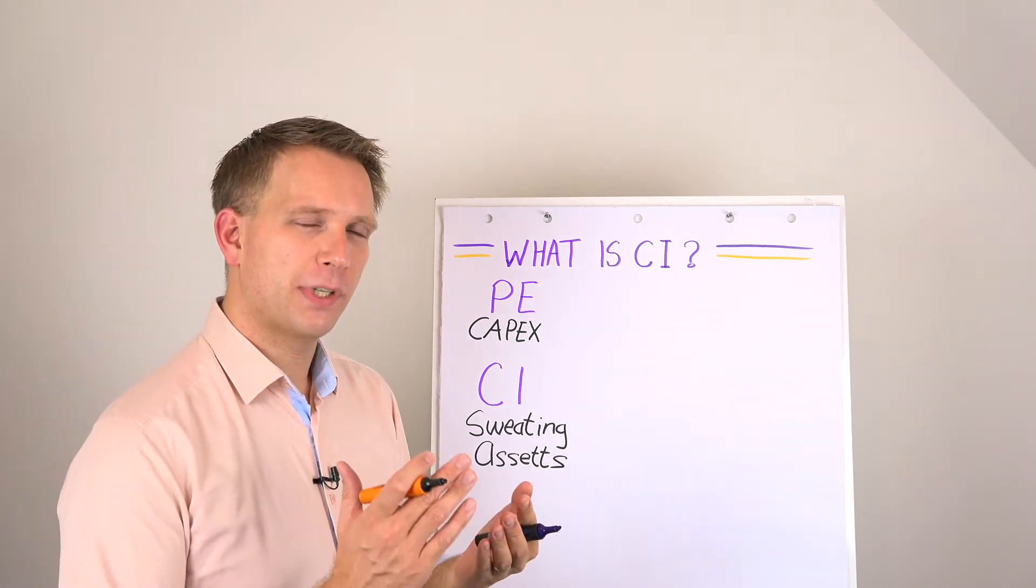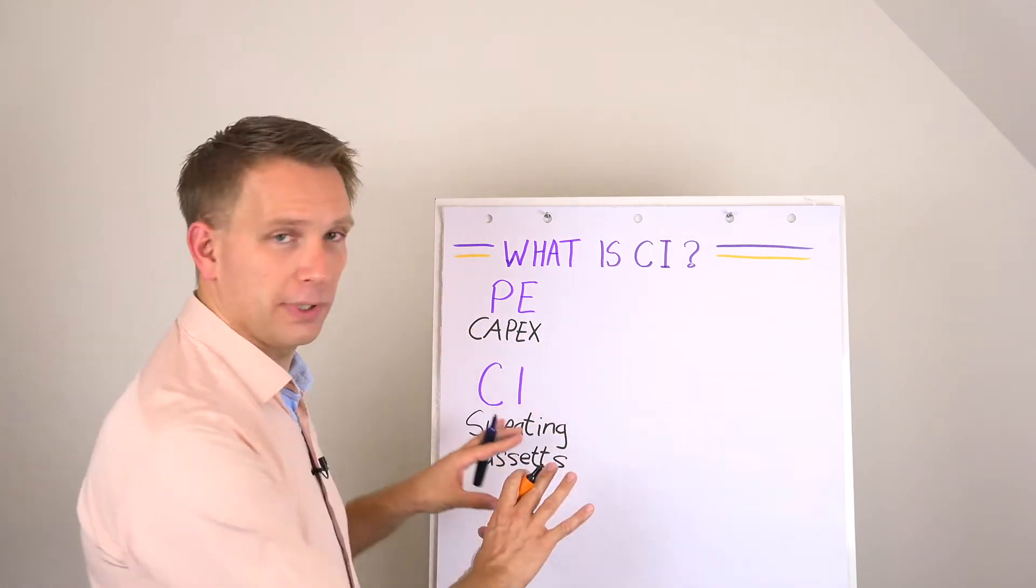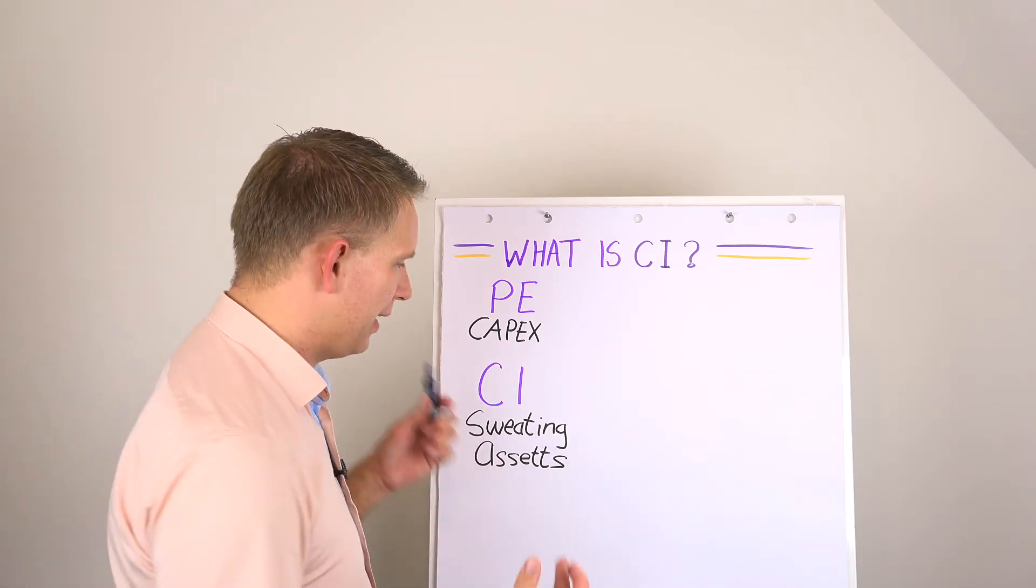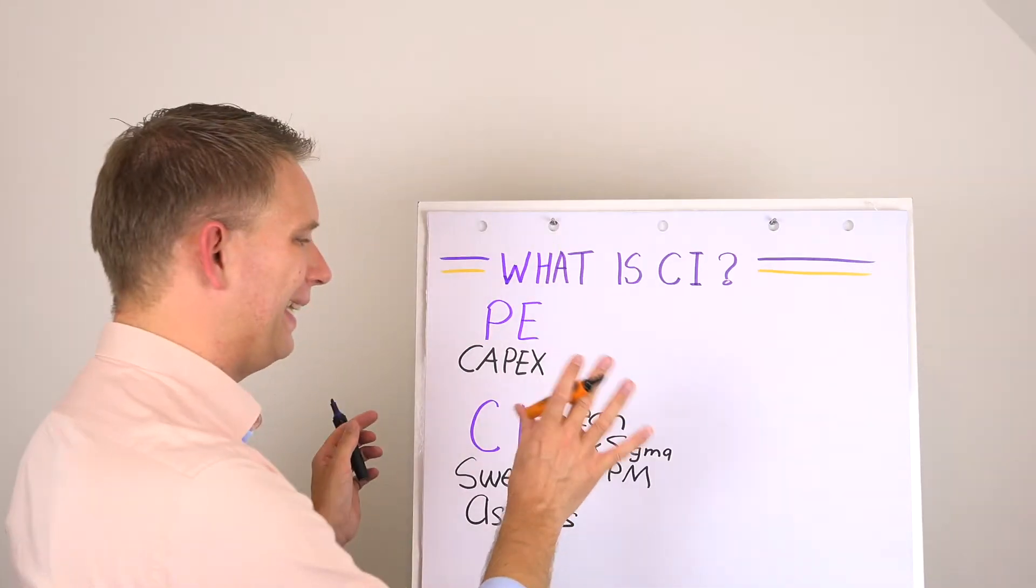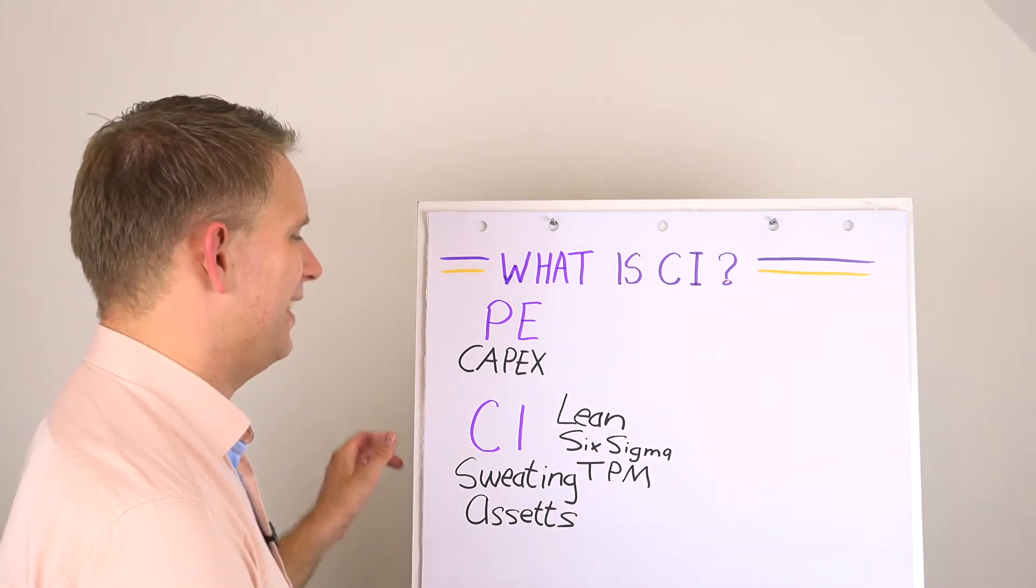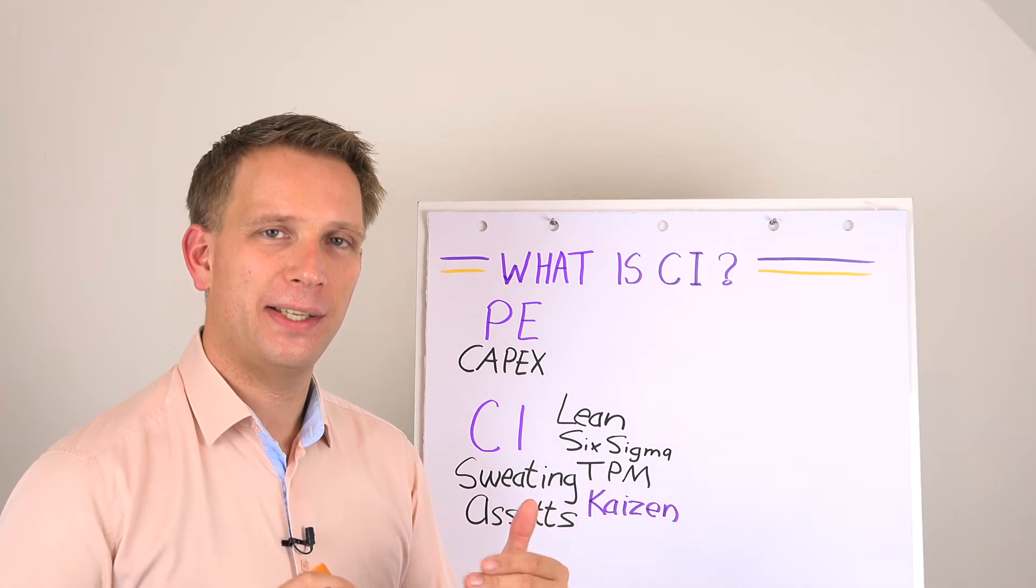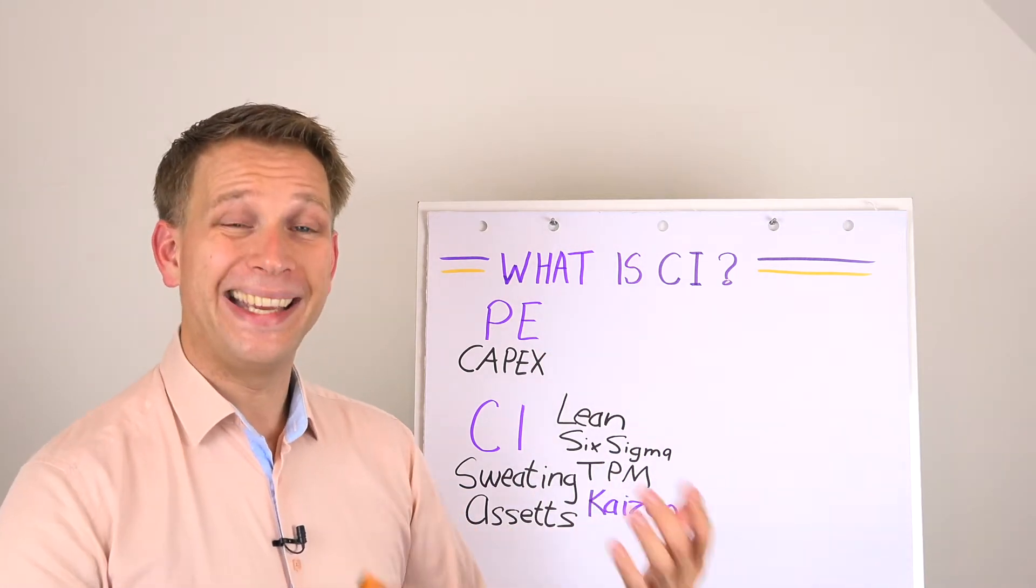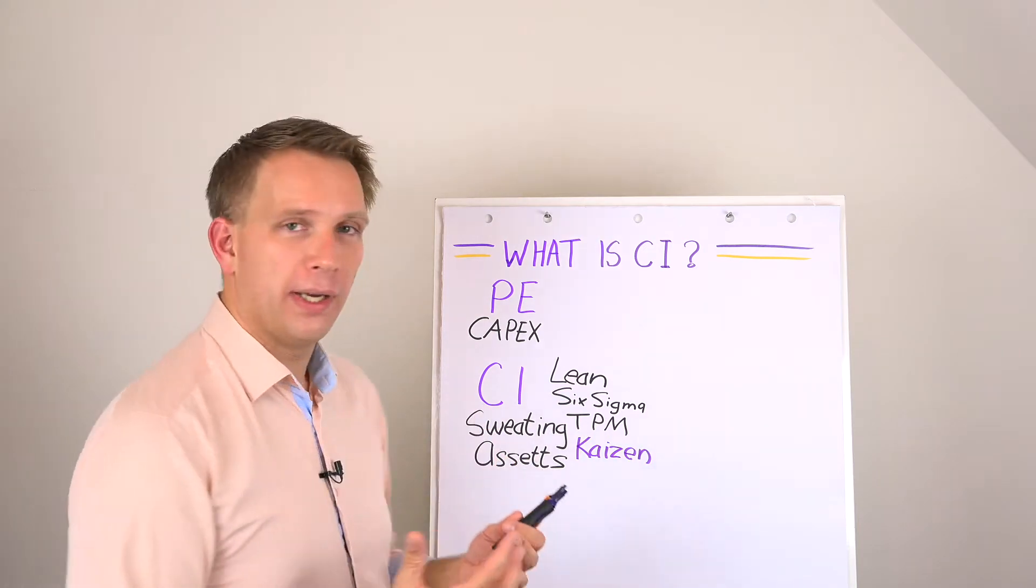Continuous improvement is also working on this, of course. The distinction is that continuous improvement mainly works with what we already have. The nice way to say it is that continuous improvement is sweating the assets. So you already have things in your organization like buildings, equipment, people. Make sure you get the maximum performance out of what you already have. And here I think is one of the key distinctions between continuous improvement and performance excellence.